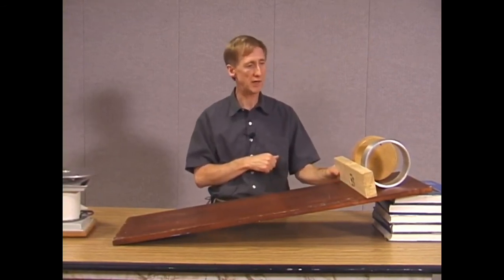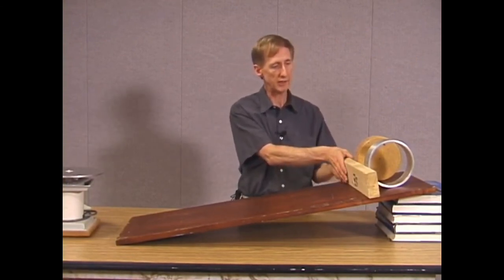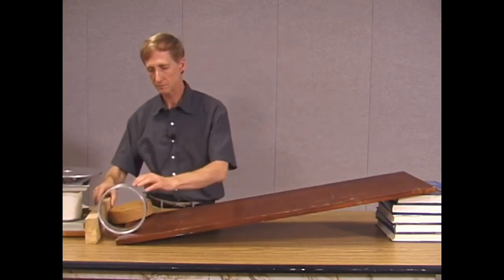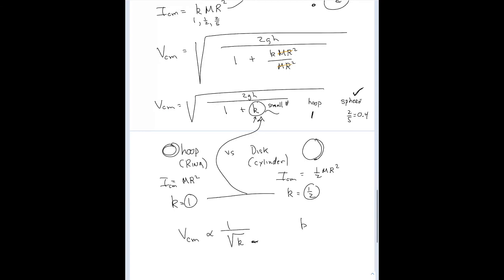Right now both objects' rotational motion is zero. Once released, one will rotate more quickly. The sphere's k = 2/5 = 0.4 is less than 1/2 and less than 1, so between a hoop, disc, and sphere, a solid sphere will always win. It's like rock-paper-scissors — you always throw rock because rock always wins. The sphere will always beat a hoop and a disc.